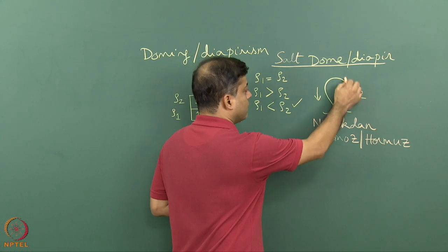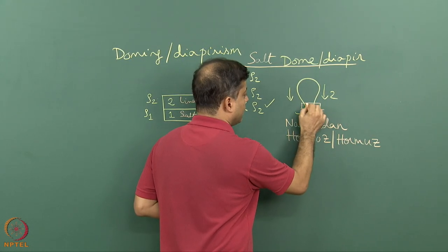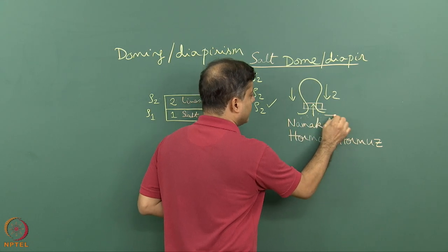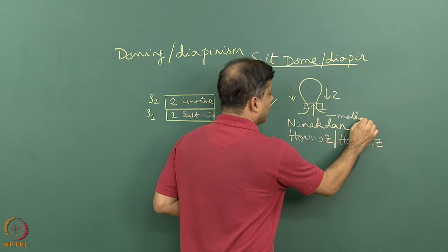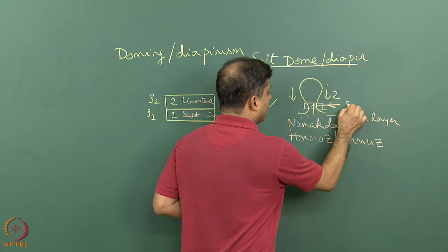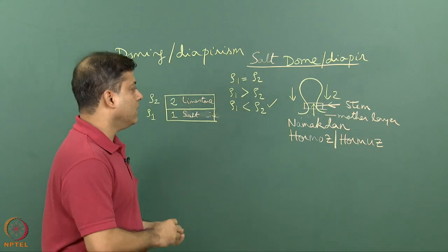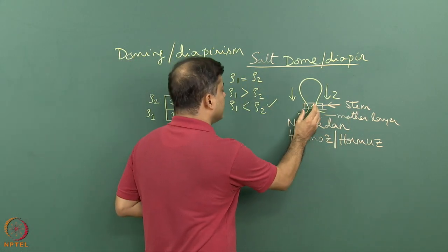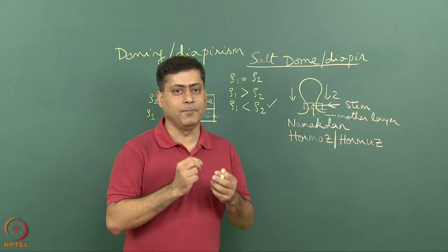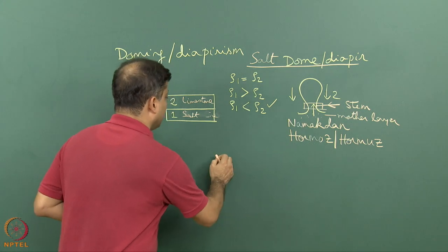In this salt dome geometry, this part of the dome which is connected with what we can call as a mother layer, this portion can be called as a stem. With time this dome moves upward and this stem can get thinner and thinner, and at one point can get detached from the mother layer.